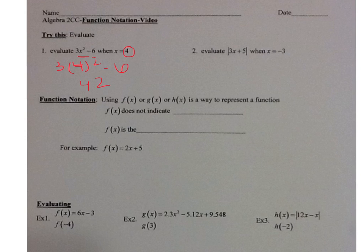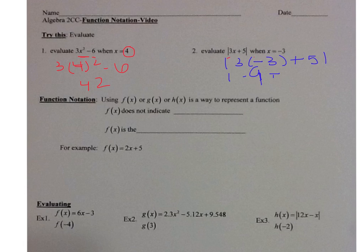And the same thing over here. We have: evaluate the absolute value of 3x plus 5 when x is equal to negative 3. So we have the absolute value of 3 times negative 3 plus 5, which is the absolute value of negative 9 plus 5. Negative 9 plus 5 is negative 4, and the absolute value of negative 4 is 4. Remember, absolute value is how many spaces on the number line a number is — negative 4 is 4 spaces from 0.